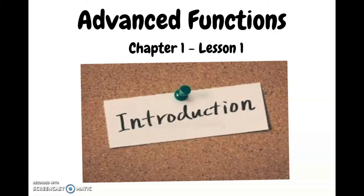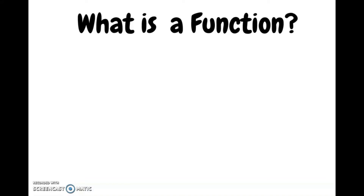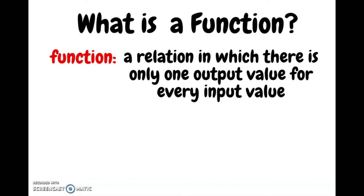Now let's get into the review. The first thing we're going to review is what a function is. A function is a relation in which there is only one output value for every input value. Another way of saying this is that an x value can only have one corresponding y value — there should only be one output value. There are three ways to determine whether a relation is a function.